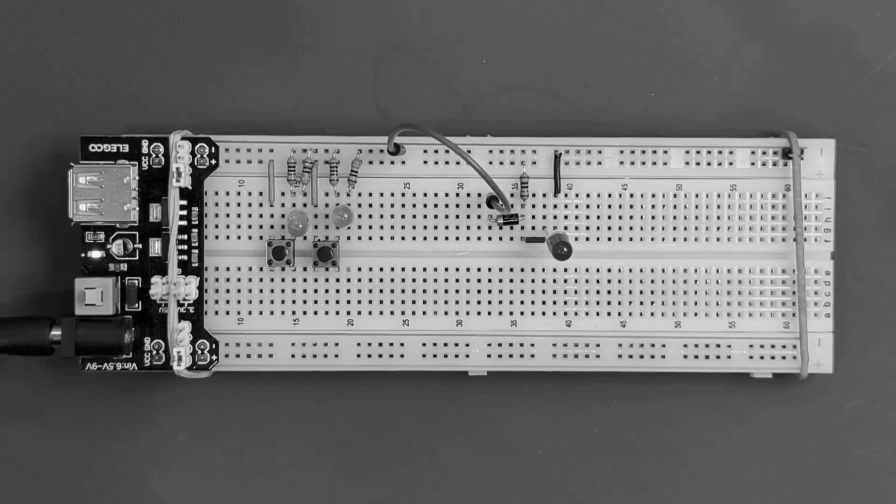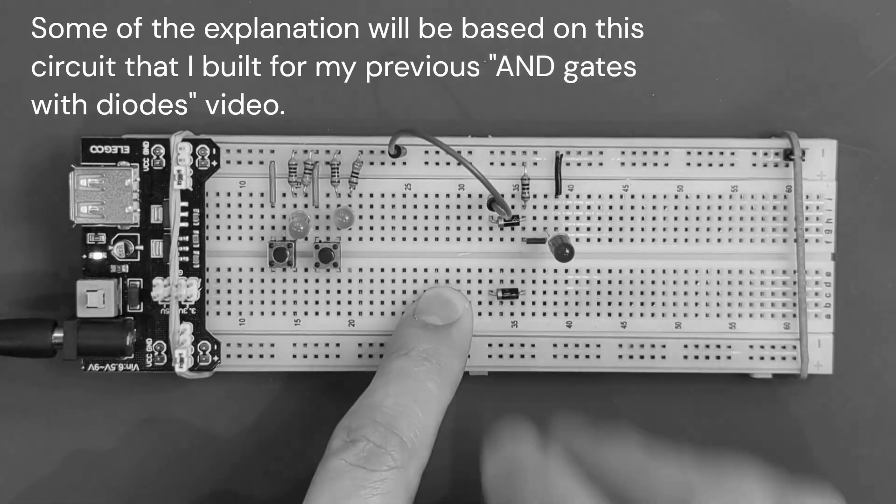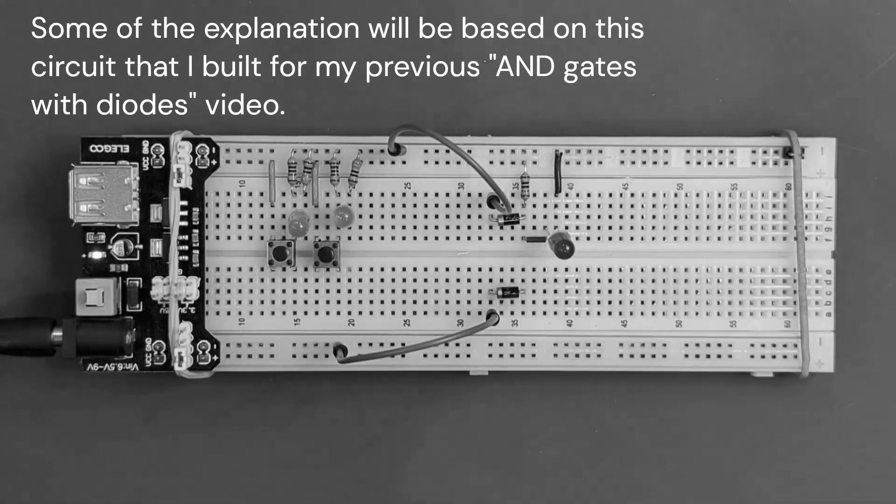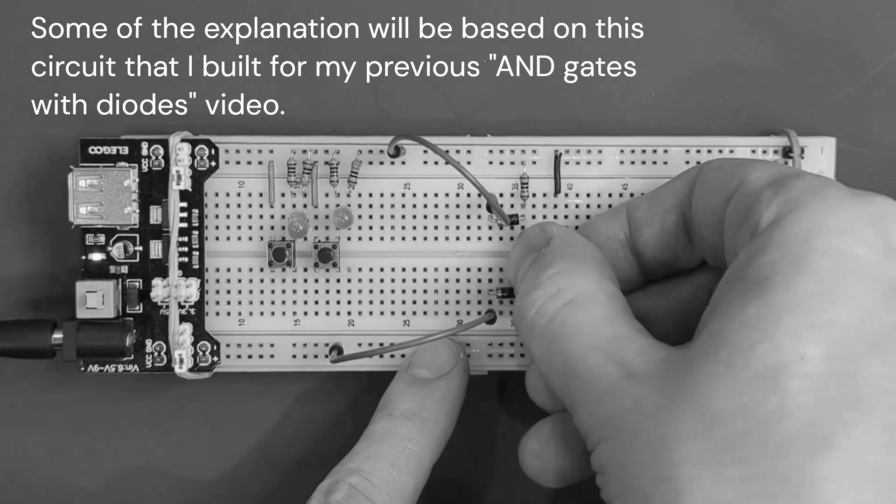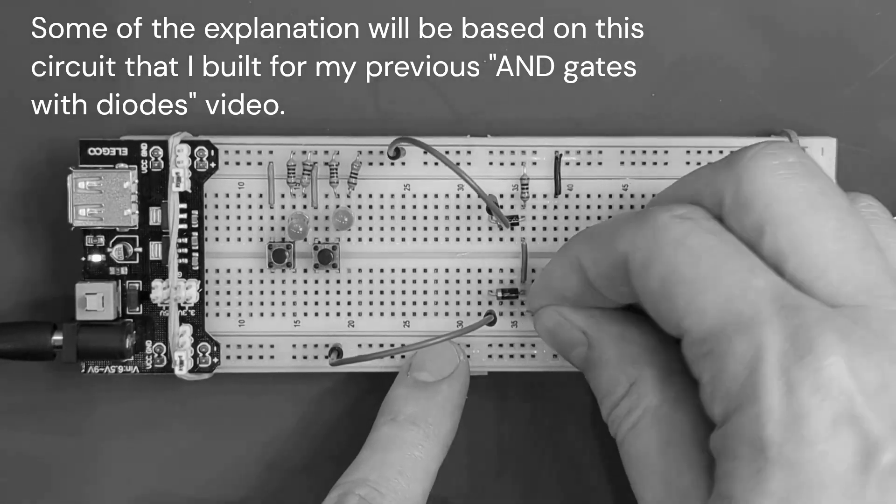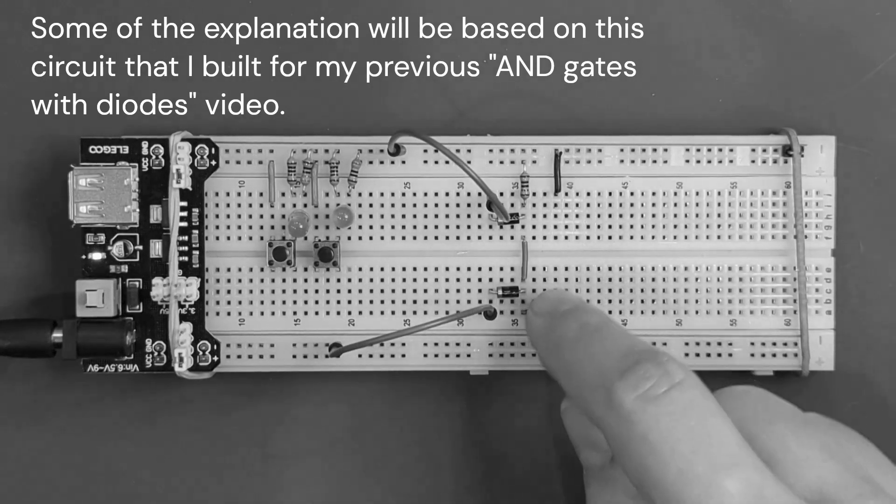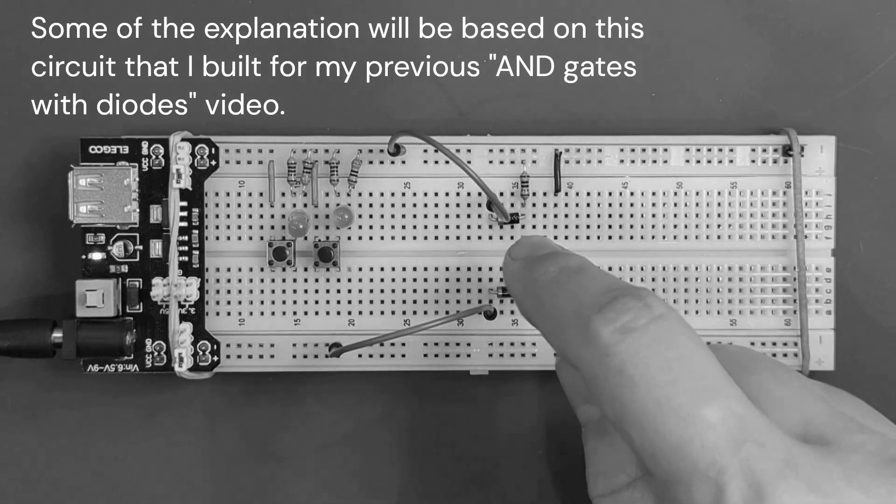This video is a departure from my usual content. Instead of focusing on the practical build, I'll be delving into some theory behind it. I'll discuss a simplified notion of impedance and its crucial role when connecting circuits. This understanding will highlight why input and output voltages are just a part of the puzzle when interfacing two digital components. It will also help us comprehend the use of pull-up or pull-down resistors in digital circuits, and when they may or may not work.